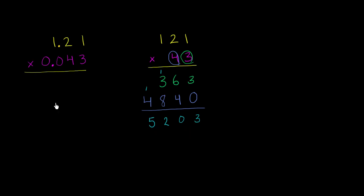Now how is this useful for figuring out this product? Well, to go from 1.21 to 121, we're essentially multiplying by 100. We're moving the decimal two places over to the right.